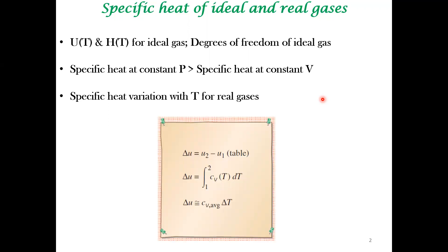With respect to engineering thermodynamics, computation of delta U is very important. There are three ways of computing it. Using tabulated values may appear inelegant but is often the most accurate approach. If delta T is very small, we can approximate using an average value of specific heat capacity within that window to get delta U.